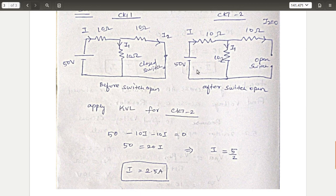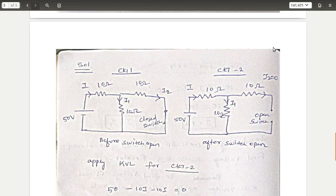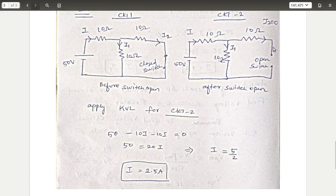If we use the current divider rule, we will find the current. That is the only I one, so we will find the current. This current is in the circuit. Open-circuit analysis is now clear. If you have any doubts or comments, please share them. See you in the next video.